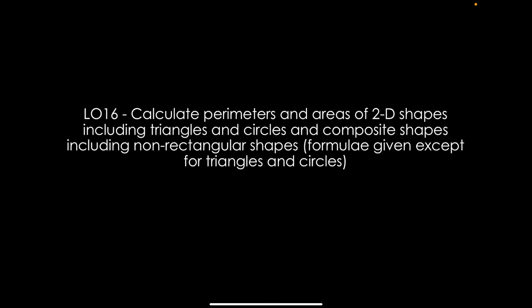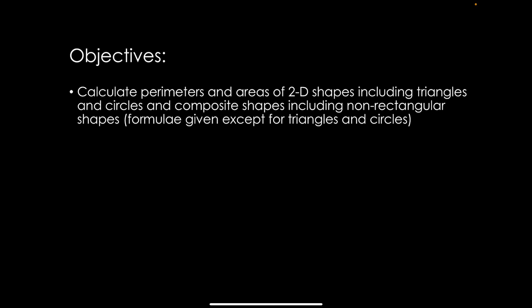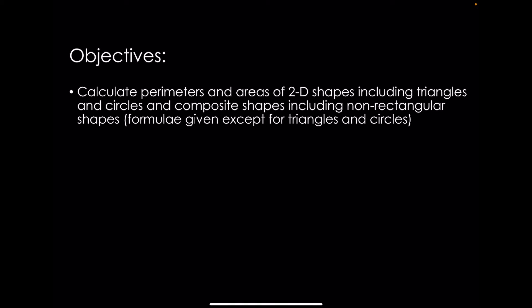Hello and welcome to your lecture on learning outcome 16. We will be concentrating on perimeter and area. In this lesson, your objectives are to calculate perimeters and areas of 2D shapes, including triangles and circles, and composite shapes, including non-rectangular shapes.